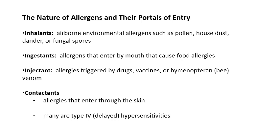Different types of allergens enter the body in different ways. Inhalants are allergens you inhale — dust, fungal spores, pollen. Ingestants are things you eat, so those are food allergies. Injectants are things injected under the skin — for example, an allergic reaction to something in a vaccine, or bee venom getting injected directly under your skin. Contactants are things that touch the surface of the skin on the outside and trigger a reaction that way.